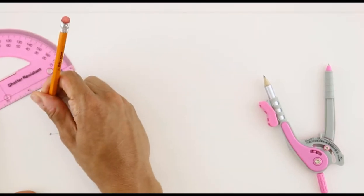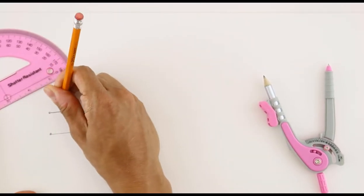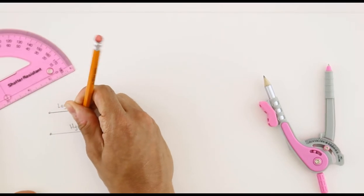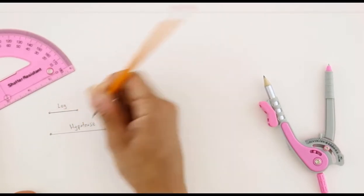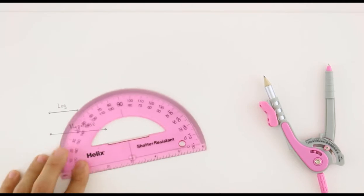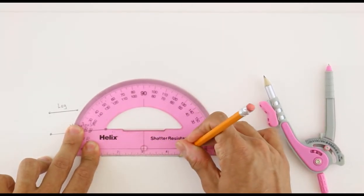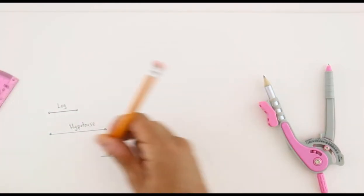My one segment, the smaller segment, I would go ahead and label the leg. And of course the larger of the two segments would be properly labeled the hypotenuse. So how would I use the specific length of these two segments to create a right triangle with that specific leg and hypotenuse?